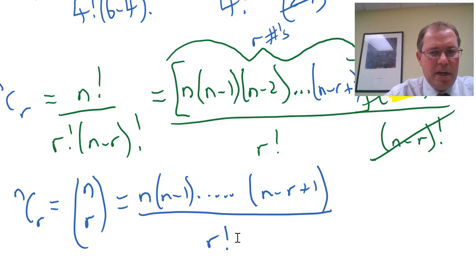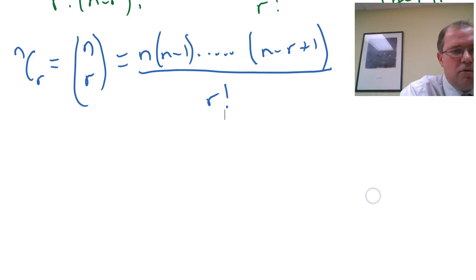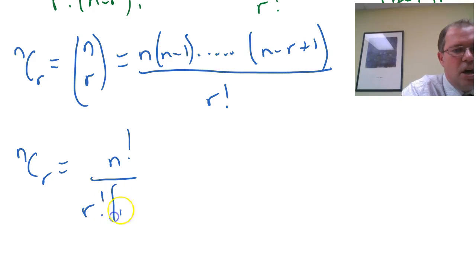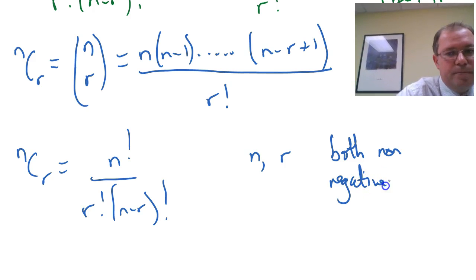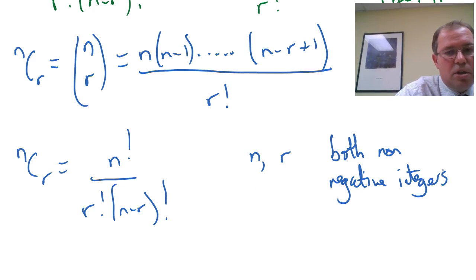Now, if you think about this formula, it's actually a lot more powerful than n choose r. Because if you compare this with the n choose r formula, the n choose r formula requires that n and r are both non-negative integers. Because we are using the factorial notation. So, the smallest number we can do factorial of is 0 factorial, which is defined to be 1. And then we can do 1 factorial, 2 factorial, 3 factorial. So, have to be non-negative integers. In other words, positive integers and 0.